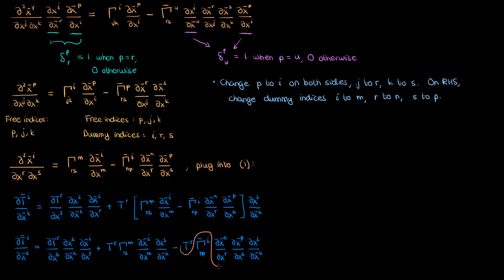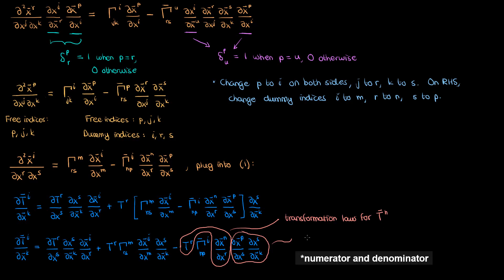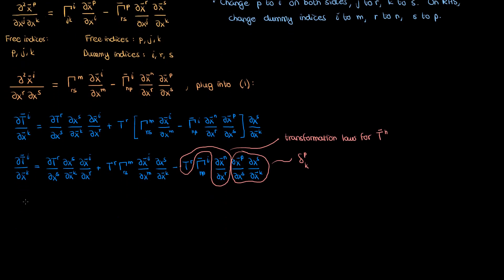Now let's make some simplifications. The term involving the product of t super r and the partial of x super n bar with respect to x super r is by definition of the contravariant transformation law just the transformation law for the contravariant vector component t super n bar. Meanwhile the product of the last two partial derivative terms, which share the same denominator with partial of x super s, becomes the Kronecker delta symbol with indices p and k — so I replace all p indices in the last term with k.